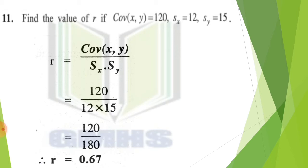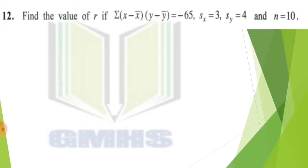So friends, please like this video if it is helpful for you. Then question number 12, let's start. Find the value of R if sigma X minus X bar into Y minus Y bar is equal to minus 65. Now here you have given the values S of X, S of Y, and N is equal to 10. So again, short sum of second formula.